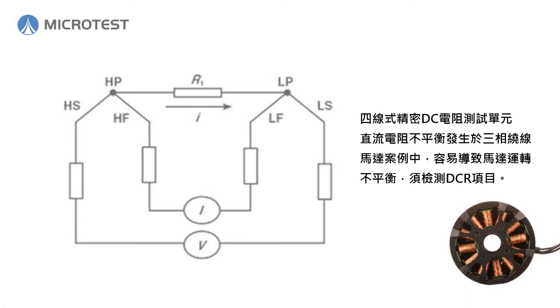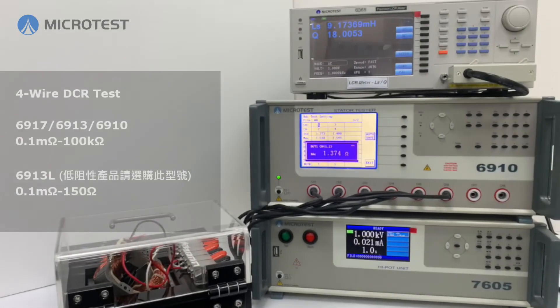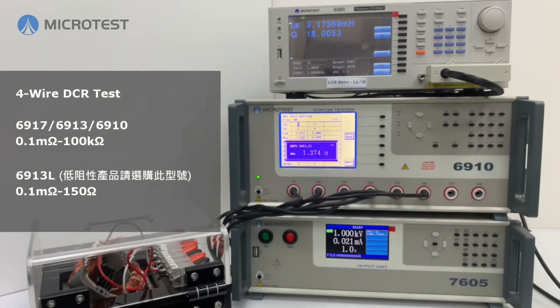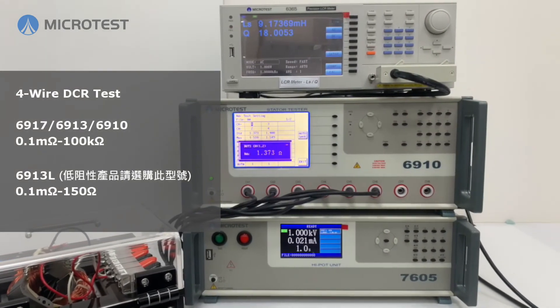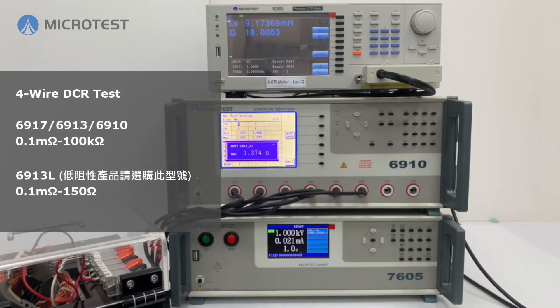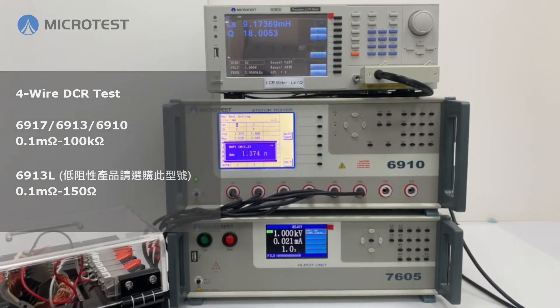Uneven DC resistance can occur in a 3-phase motor, which will cause uneven rotation. Microtest's 4-wire DC resistance measurement will be more accurate than other methods.